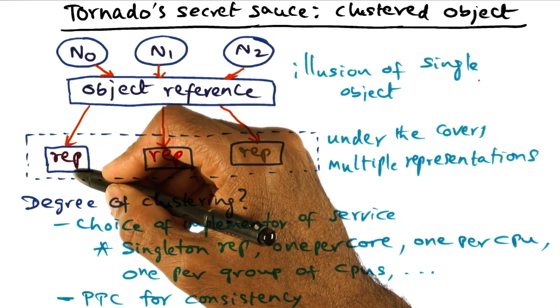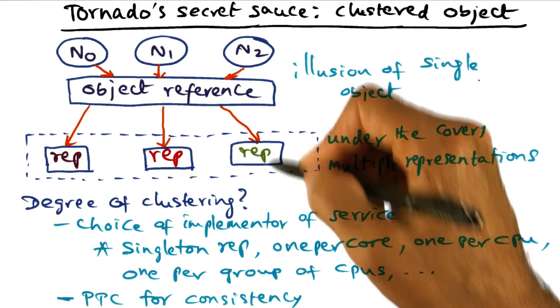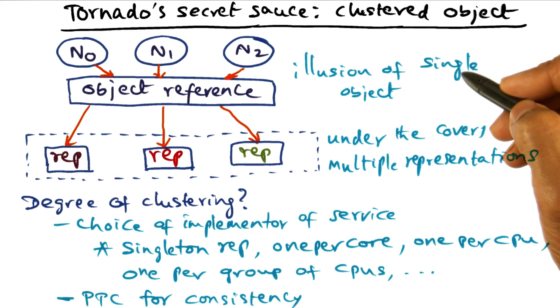For instance, n0 may have a representation that it is looking at, different from n1, different from n2, but the object reference is the same.